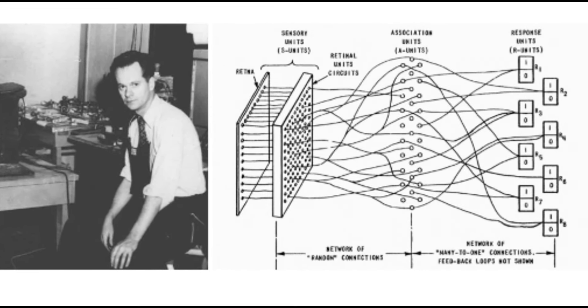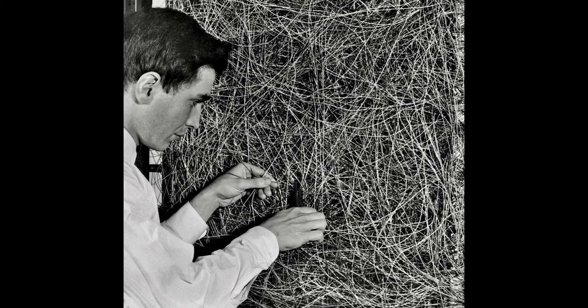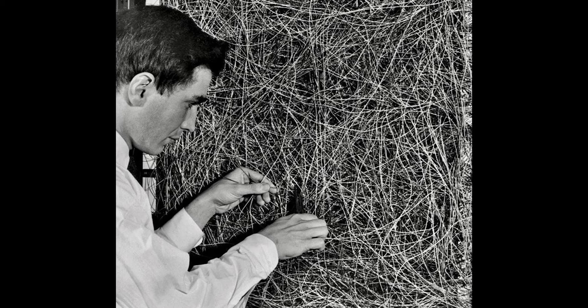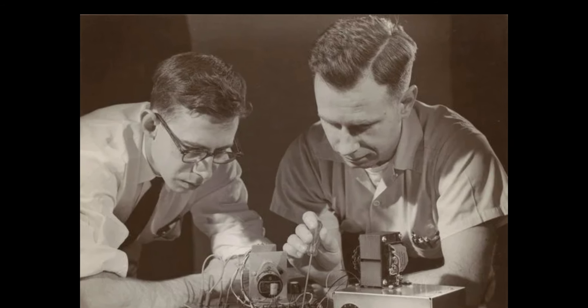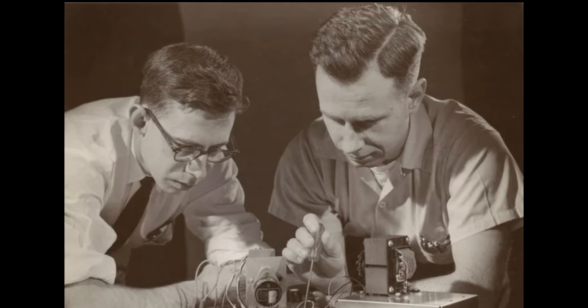The perceptron, introduced by Frank Rosenblatt in 1957, was one of the earliest forms of neural networks. It consisted of a single layer of computational units capable of learning simple tasks. However, perceptrons were limited in their ability to solve complex problems.